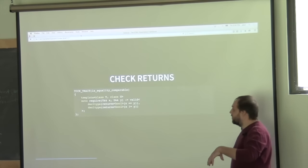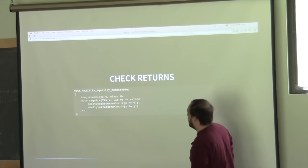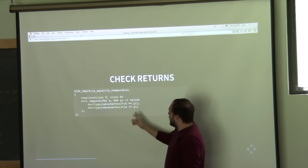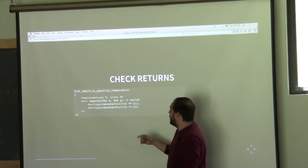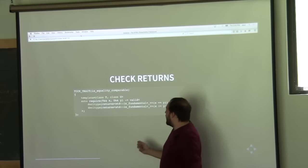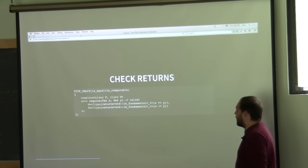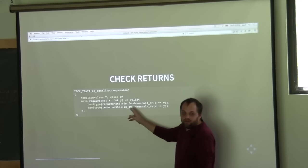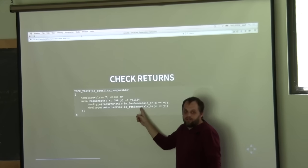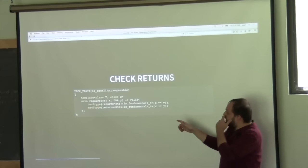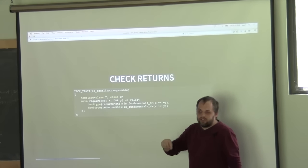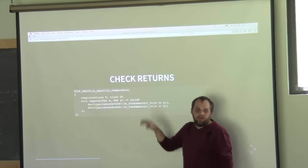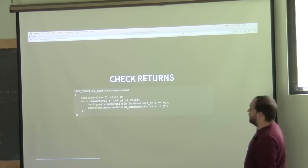You can also check what an expression returns. Going back to 'is_equality_comparable', we can check that this expression actually returns bool. When it checks that it returns bool, it works similarly to concepts light — it checks that it's convertible to bool. You can also pass a trait into the 'returns' clause using placeholder expressions to check against it, such as checking for fundamental types or exact type matches using 'is_same'.